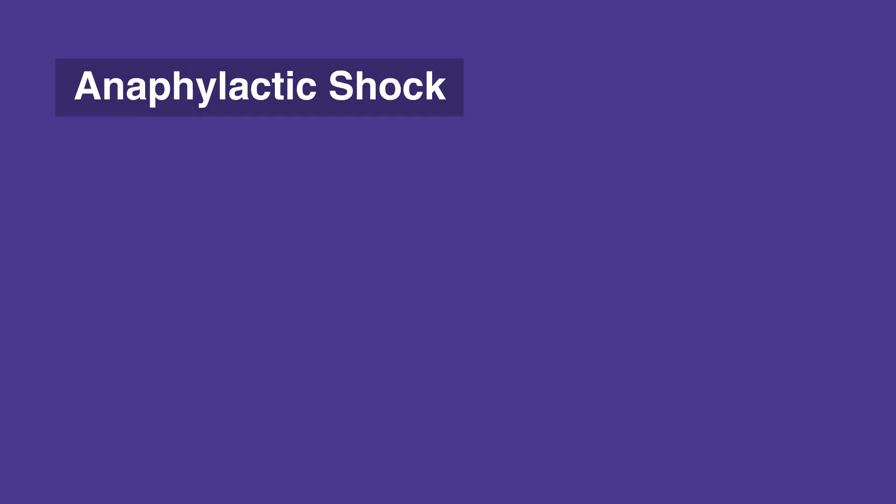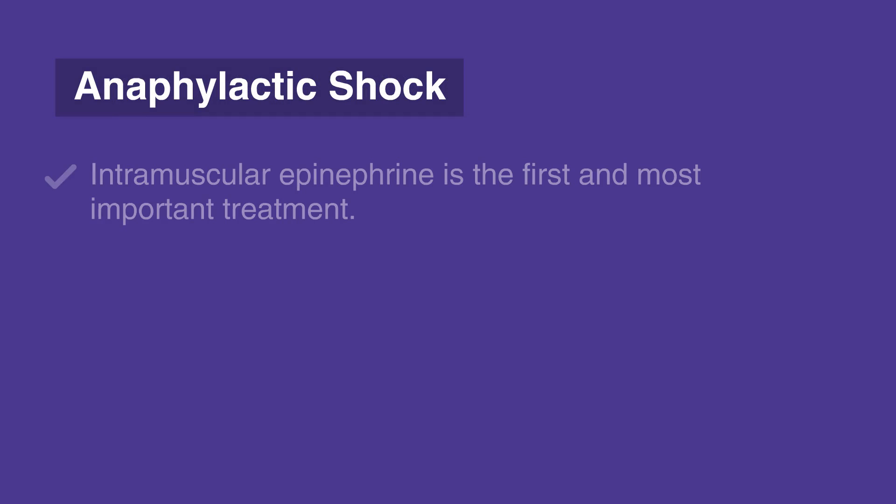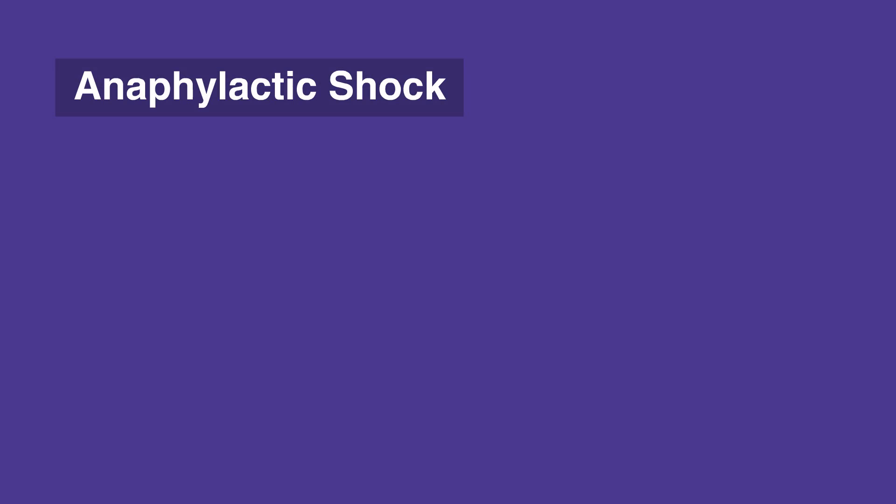For anaphylactic shock, intramuscular epinephrine is the first and most important treatment. In severe cases, a second dose of epinephrine may be needed, or intravenous administration may be required. Crystalloid fluid can be administered judiciously. Remember that in anaphylactic shock, capillary permeability may increase considerably. Thus, while it's important to support blood pressure overall, there is significant likelihood that third spacing and pulmonary edema will occur.